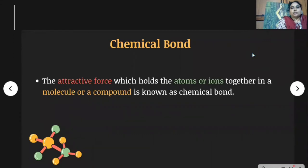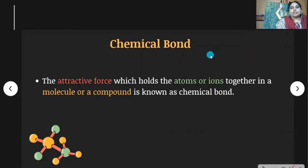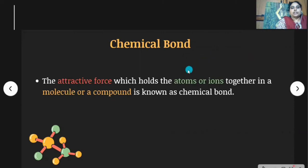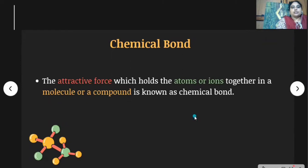Students, already you know about the periodic table. In the periodic table, a total of 118 elements are present. Out of 118 elements, most of the elements occur in nature in the form of compounds — they do not exist in their free state in nature. For example, in the water molecule, hydrogen atom combines with oxygen and produces water. So some attractive force should be present between these two atoms. The attractive force which holds the atoms or ions together in a molecule or a compound is known as a chemical bond.